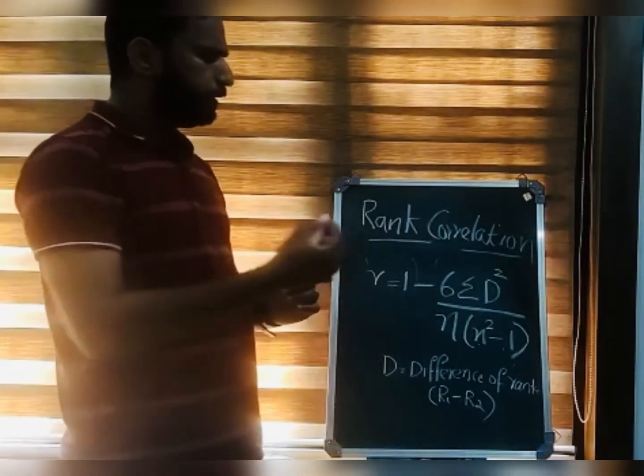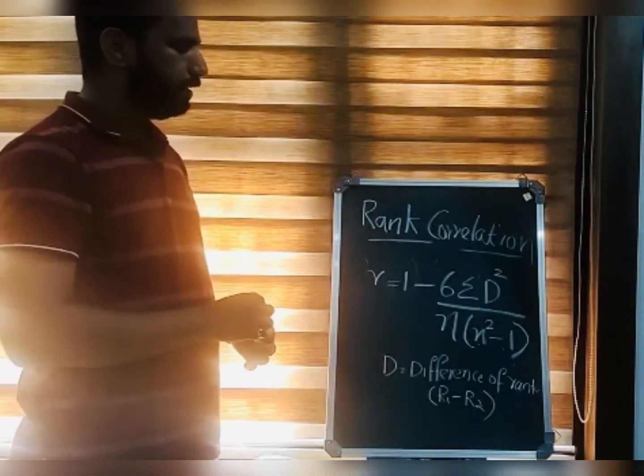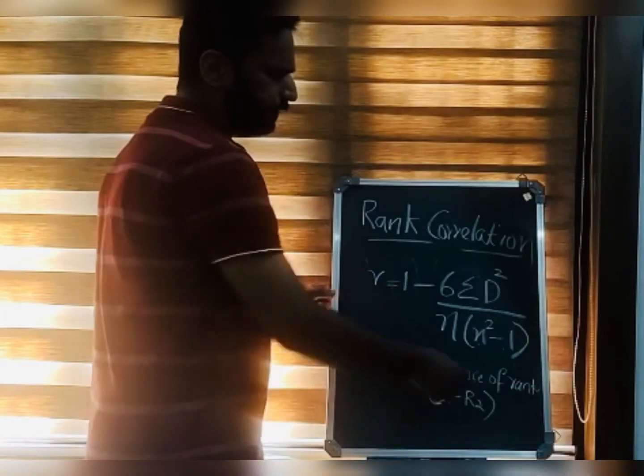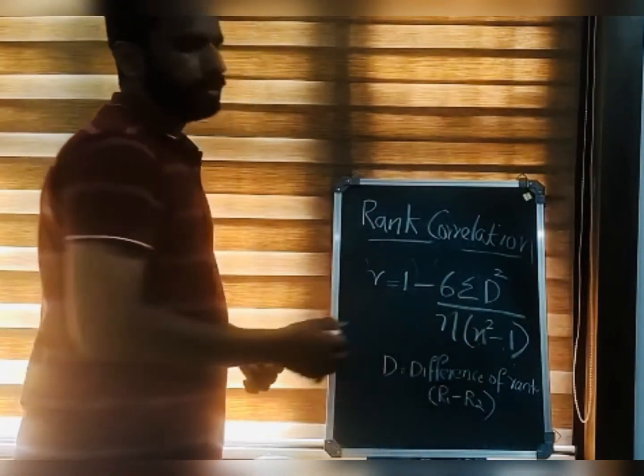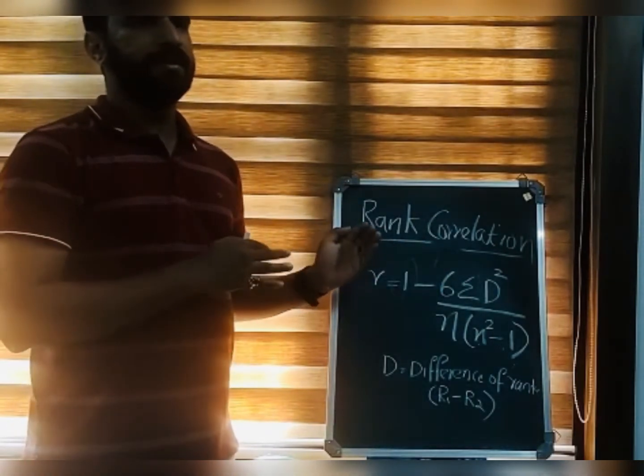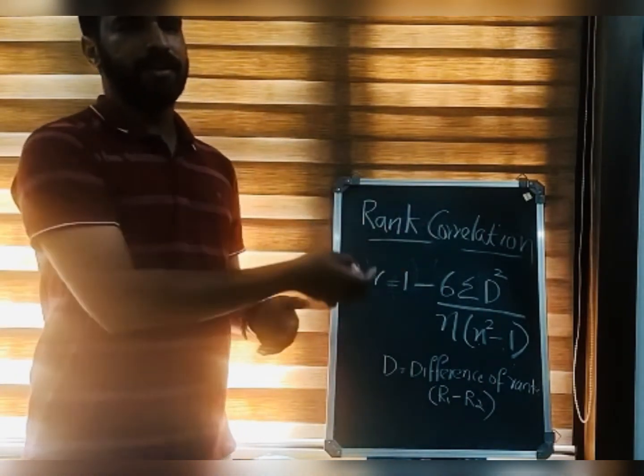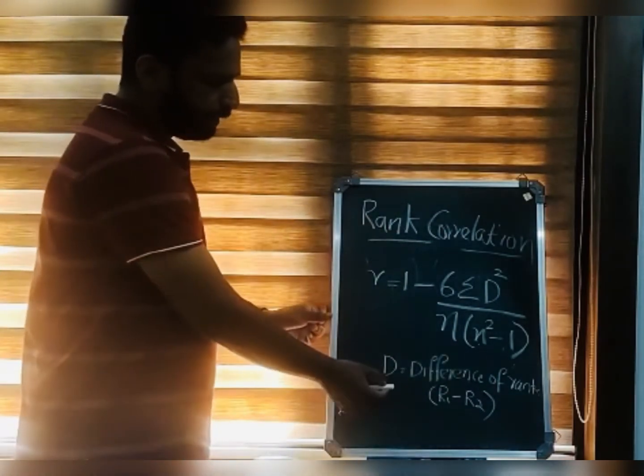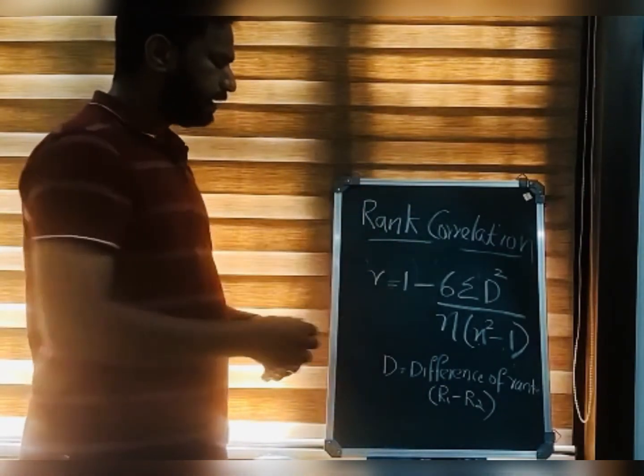Now we have n, the number of observations. And the other variable is D. D is defined as difference of rank, that is R1 minus R2. In rank correlation, we have to assign rank. Rank is the rank difference in the value. That is about the equation of rank correlation.